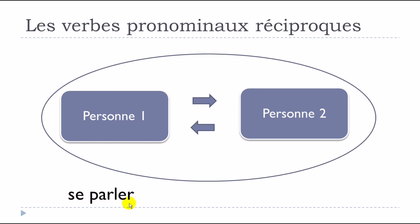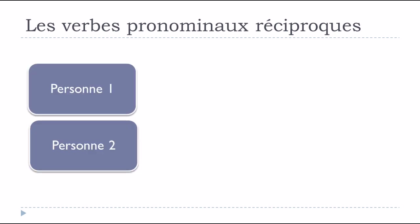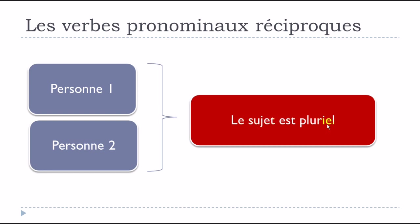A good example is se parler. In the sentence ils se parlent, they speak to each other - that is the concept of les verbes pronominaux réciproques. La personne numéro un parle à la personne numéro deux, and vice versa. Because we need two persons, the subject must always be in the plural form.